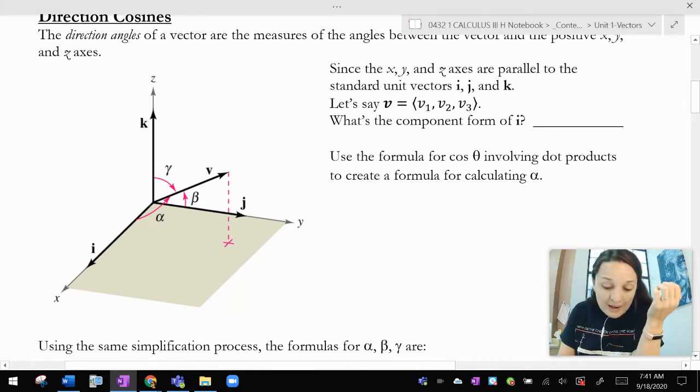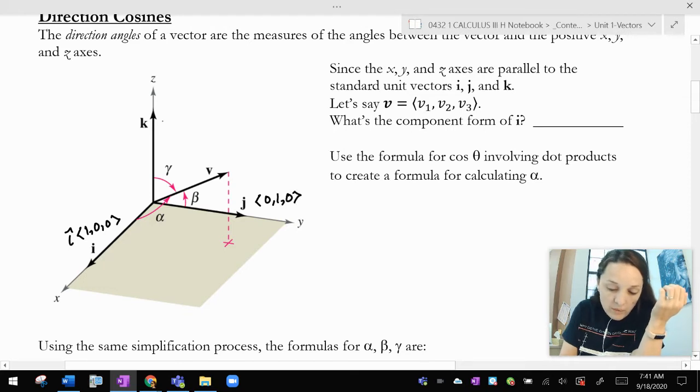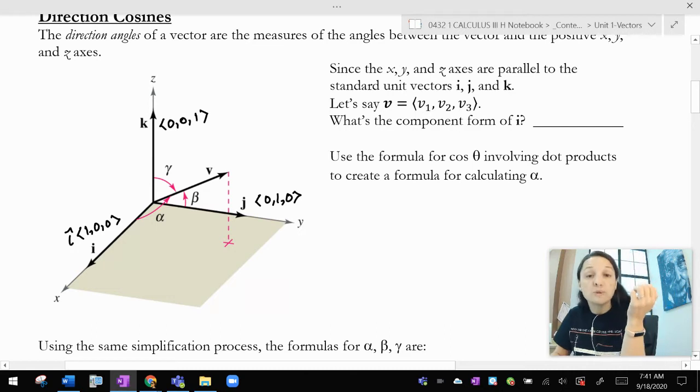So if I want to figure out the direction angle of something, it's the angle that a vector in space, this vector v, makes with the x-axis, the y-axis, or the z-axis. Now, the x-axis points in the same direction as vector i. And remember, vector i is the vector (1, 0, 0).